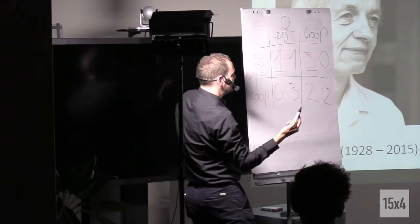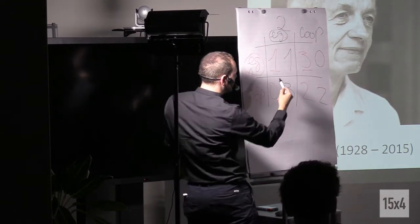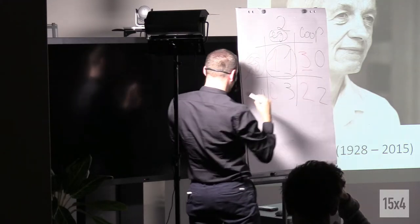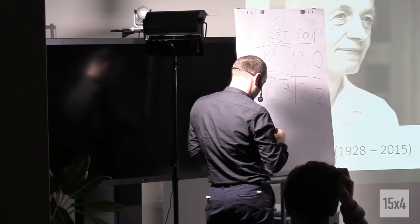And player number two has the same situation. His egoistical strategy is also the dominant one. And in the end, they meet here, both get one euro, and this is our Nash equilibrium. Great.